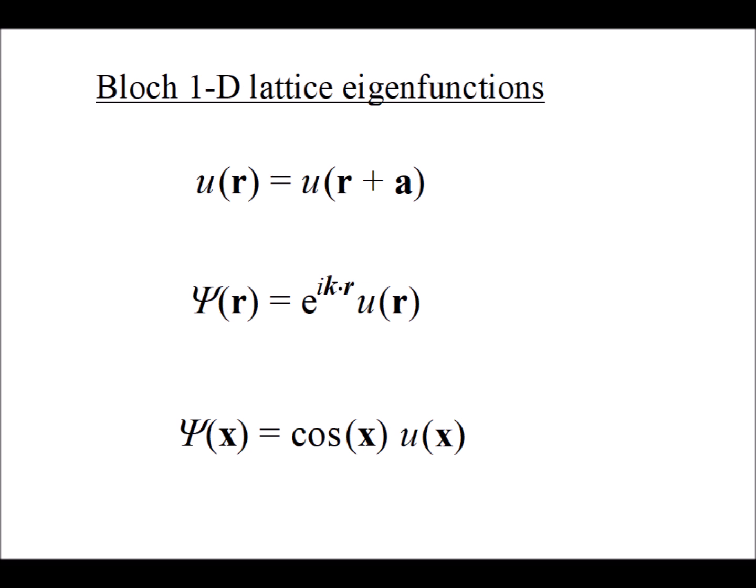Now, for this particular video, to plot these functions in the real plane — so they can be complex — we are just going to look at the real part of the wave function, which means that psi of x is going to be cosine of x times the periodic potential u of x. The two repeating potentials we're going to use are 1s and 2px-type orbitals.